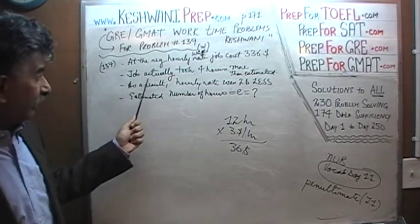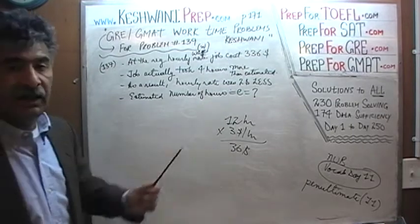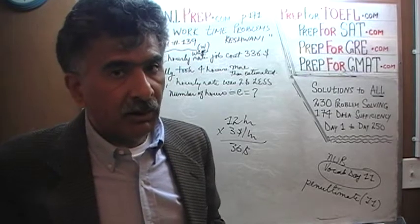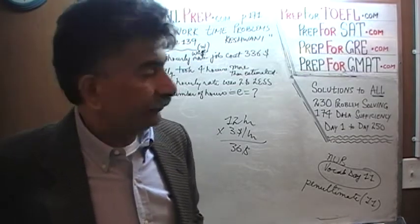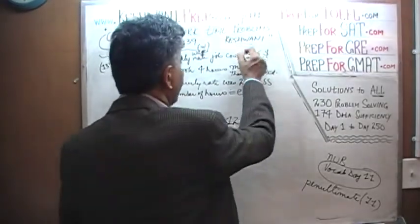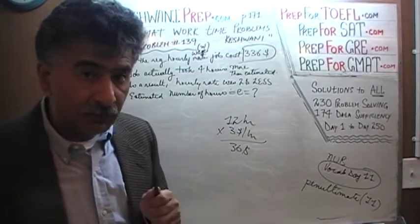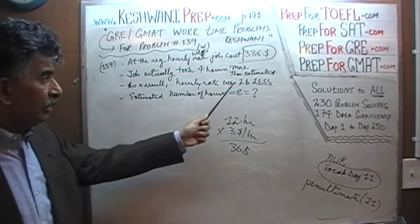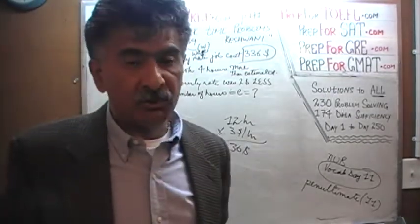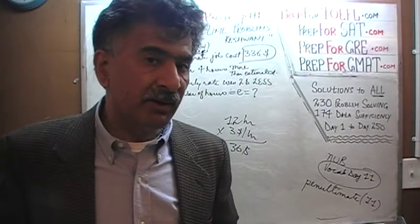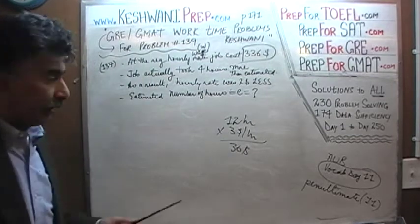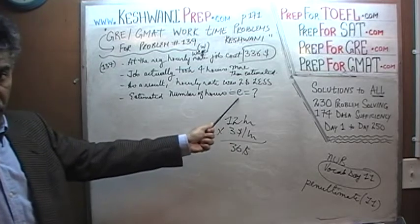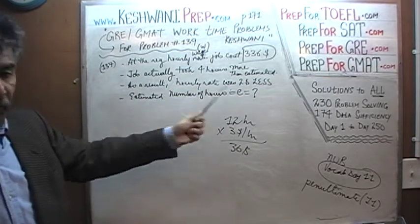For example, if he thought the job was going to take 12 hours and he wants $3 per hour, then he would have quoted you $36 for the job — which is exactly what he did here. He quoted you $336 based on how long he thought it would take. It turned out that when he started the job, it actually ended up taking him four more hours than he had estimated. As a result, because the price is fixed — this is a contract price, this cannot be changed — his hourly wage was actually $2 less than what he would have liked. The question is: how many hours did he estimate? We are going to represent estimated hours with E and hourly wage with W.